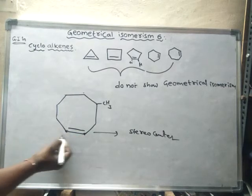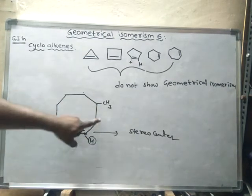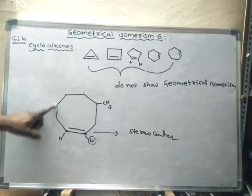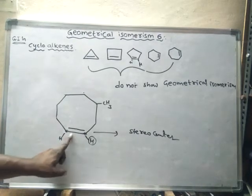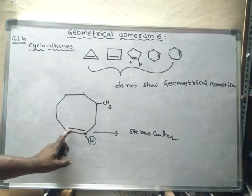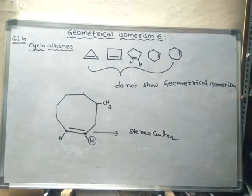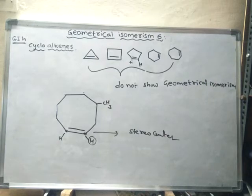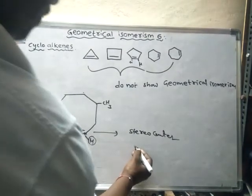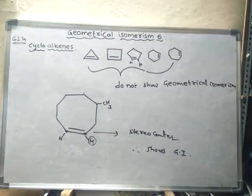The minimum requirement is eight carbons in the cycloalkene to exhibit geometrical isomerism. As there are eight carbons in the ring, this is a stereocenter. The two double-bond carbons each have different groups — hydrogen is different from the ring group. These two carbons have different groups and restricted rotation due to the double bond, confirming geometrical isomerism is possible.